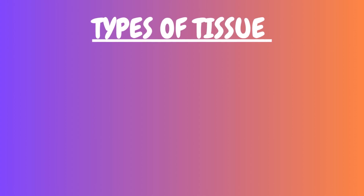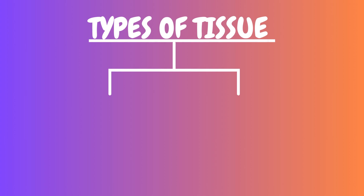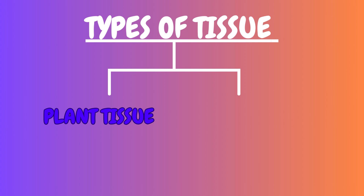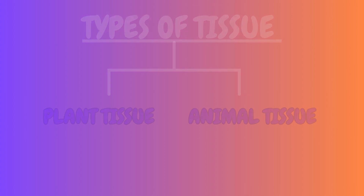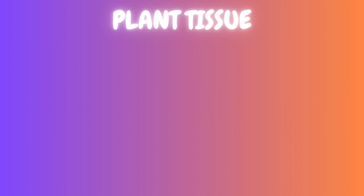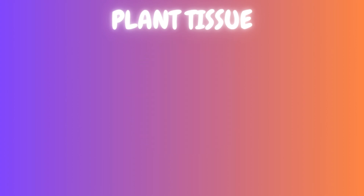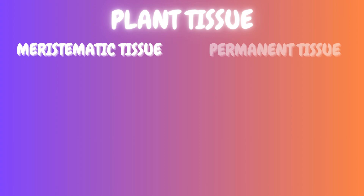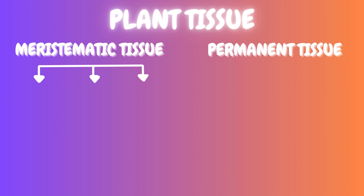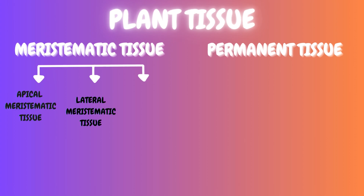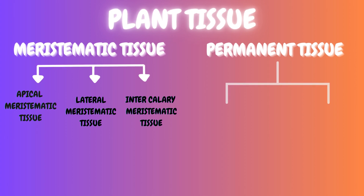Now let's talk about the types of tissues. On the basis of living things, it is of two types: one is the plant tissue and another one is the animal tissue. But in this video we will only discuss about the plant tissue. So let's have a quick view of plant tissue and its further divisions. It is broadly divided into two major types: one is meristematic tissue and the other one is permanent tissue. Meristematic tissues are then divided on the basis of their growth into three categories: apical meristematic tissue, lateral meristematic tissue and intercalary meristematic tissue.